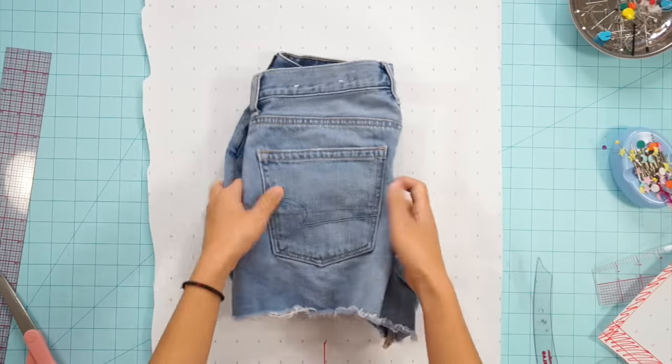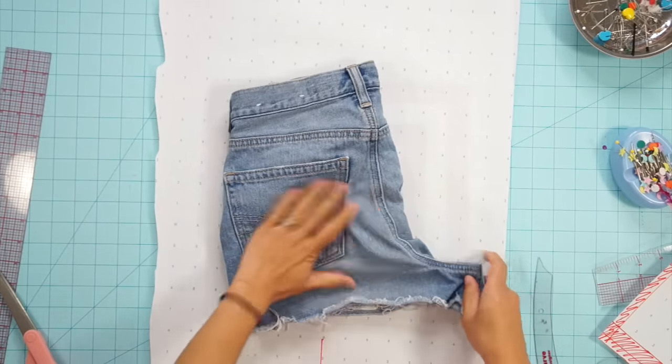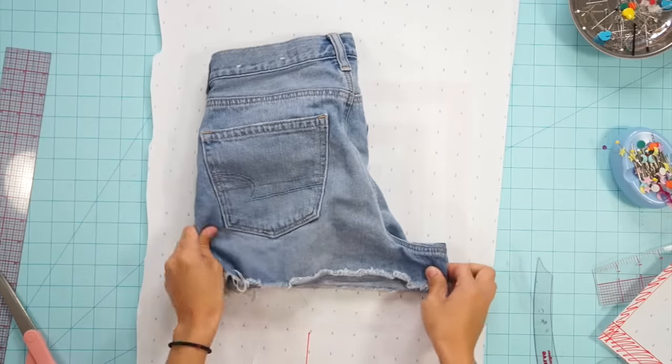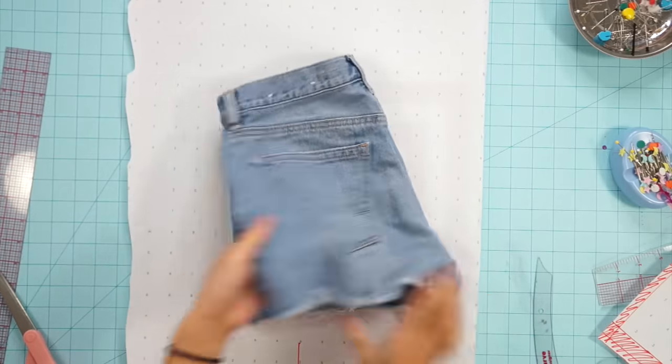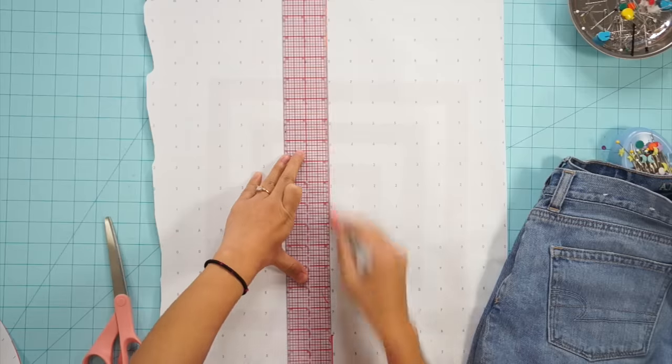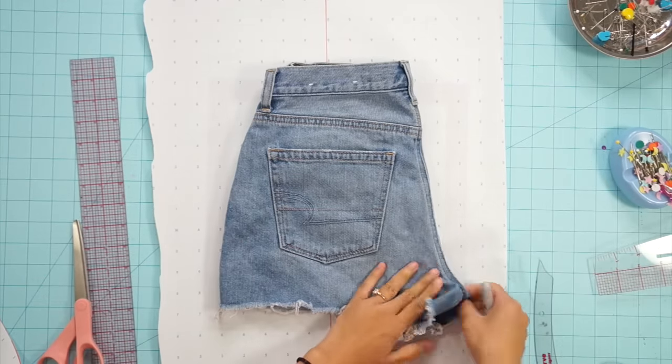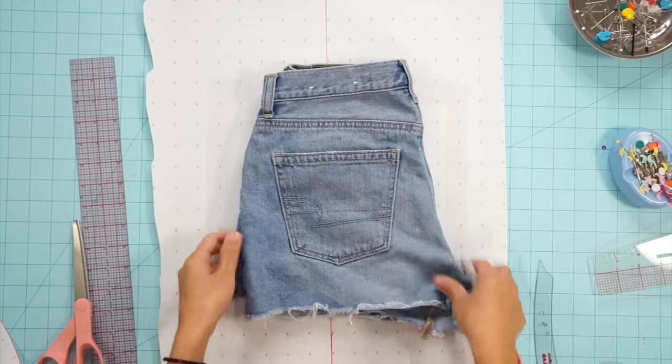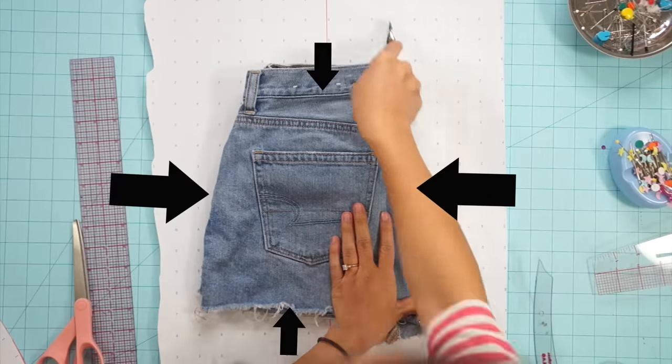For the back side of the shorts it's pretty much the same. It does get tricky though at the crotch seam and inner leg seam because the back crotch folds under to the front side of the shorts. What I like to do is focus on the side seam and center back seam laying flat and mark those first with my tracing wheel.